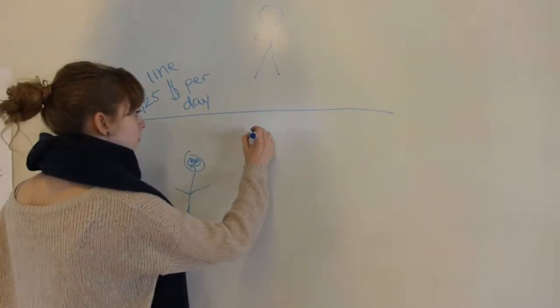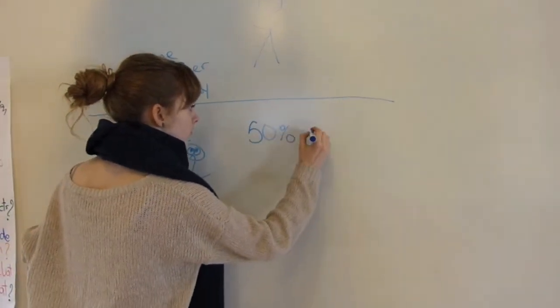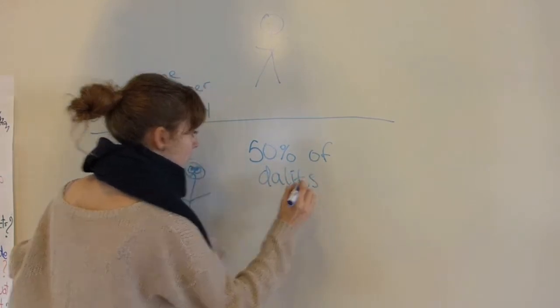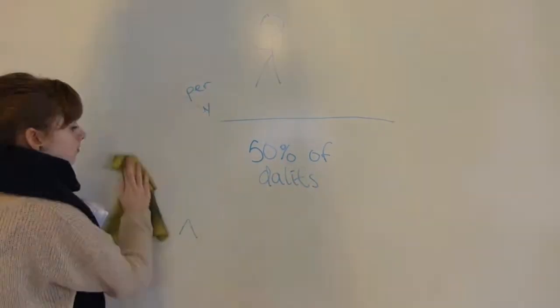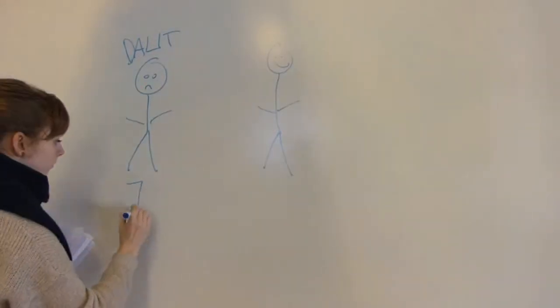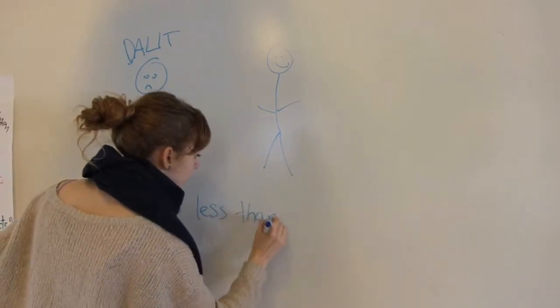About half of the Dalits live under the poverty line, meaning that they have less than one American dollar and 25 cents to use every day. Their poverty might have something to do with the fact that Dalits earn about 70% less than the rest of the population.